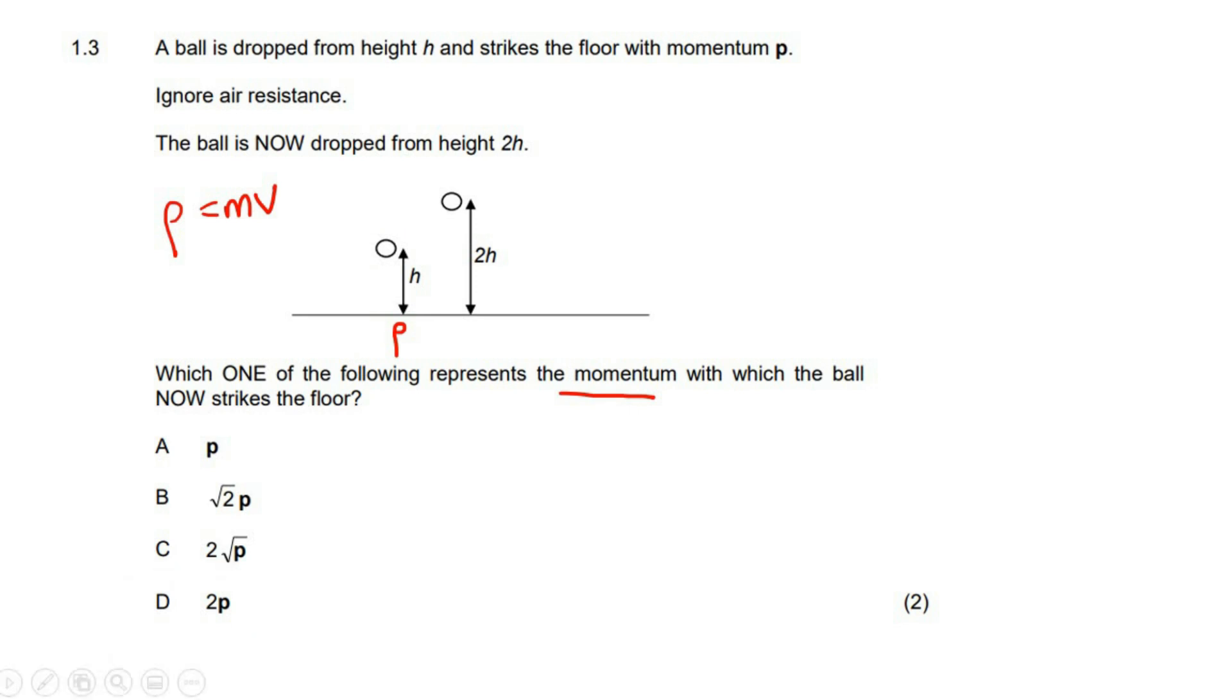But the velocity is not going to double when you double the height. It's not a linear or direct relationship. The way we can tell is by taking this formula, we need any formula that has final velocity and distance or displacement, and that would be this formula.